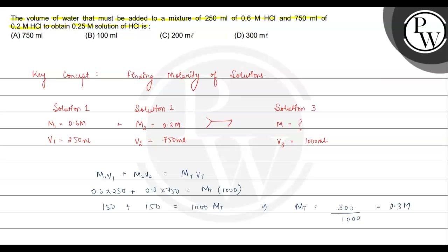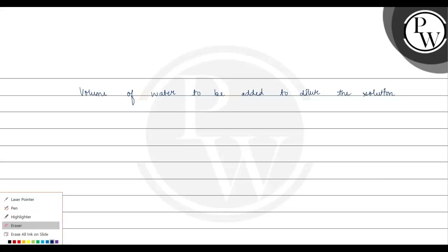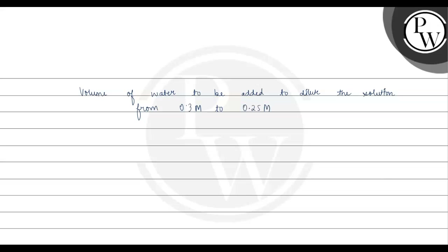Solving this gives us a combined molarity of 0.3 molar in a total volume of 1000 ml. Now we use the dilution formula M1V1 equals M2V2, where M1 is 0.3 molar and V1 is 1000 ml.